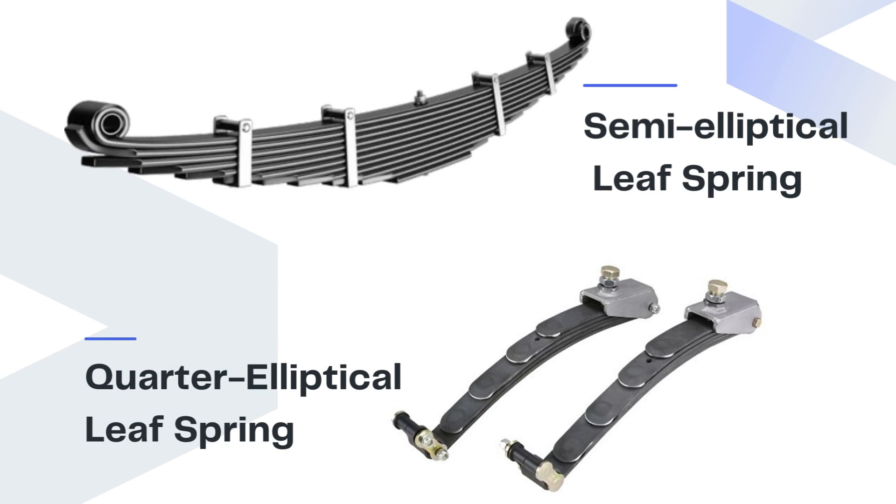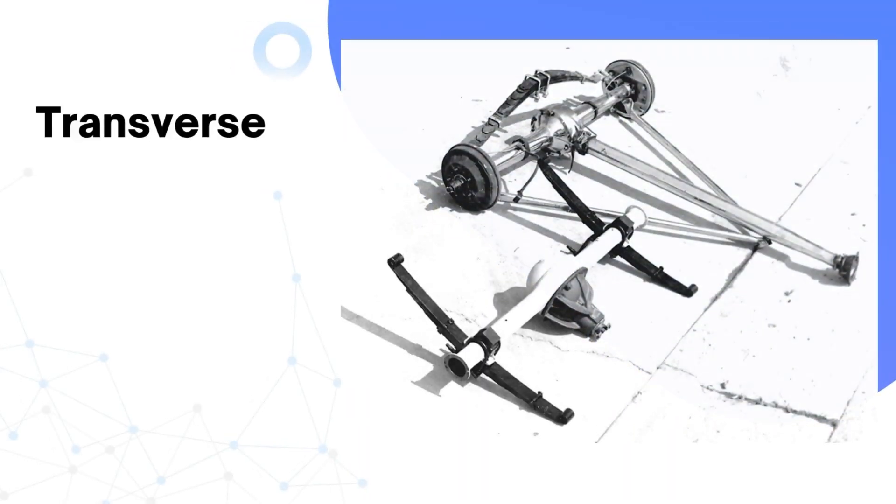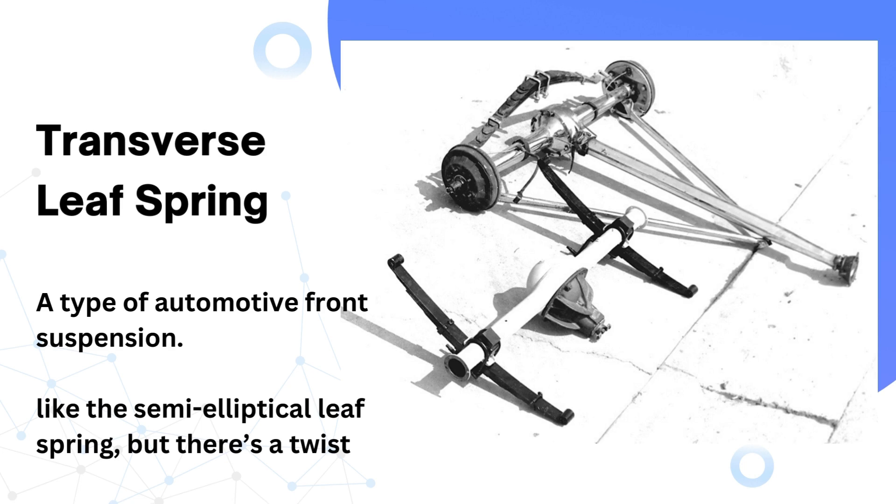Quarter elliptical leaf springs—what makes them unique is that they're basically half of a semi-elliptical leaf spring, so they're also called a cantilever type of leaf spring. Now if you combine a semi-elliptical leaf spring with a quarter elliptical one, you get a three-quarter elliptical leaf spring. Transverse leaf springs look a lot like the semi-elliptical leaf spring, but there's a twist: they're inverted so the longest leaf is at the bottom.